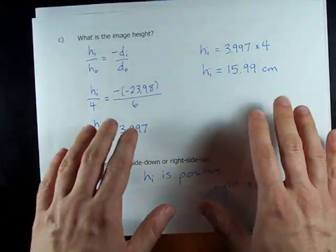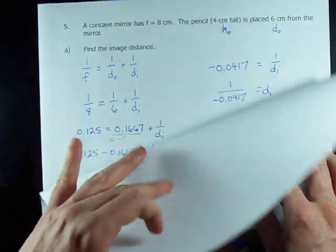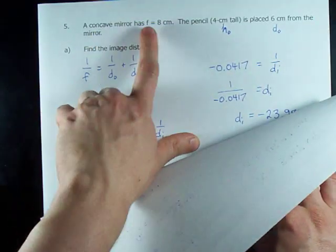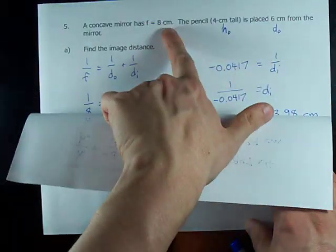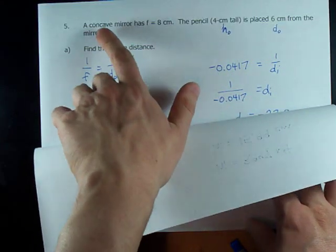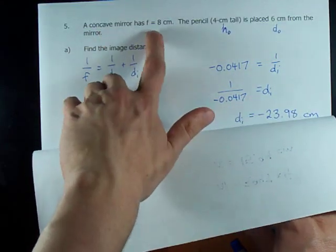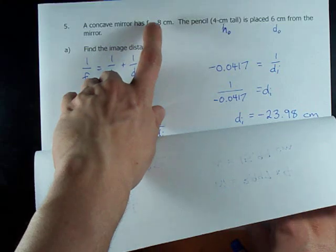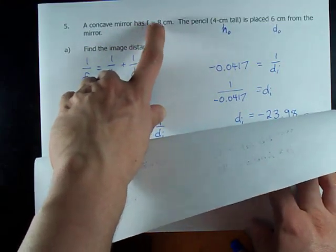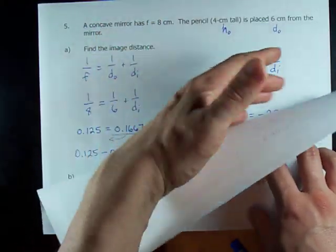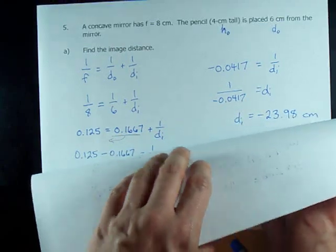The last thing I want to point out is that it's a concave mirror. So, F is positive. If this had said a convex mirror, I would have had to have made F negative. Because F is negative for convex mirrors. It's just the way we define them.